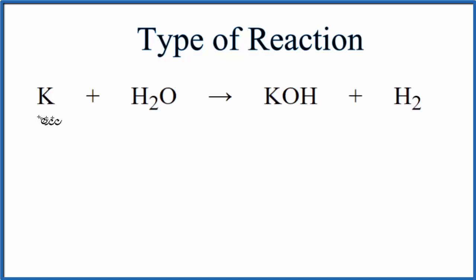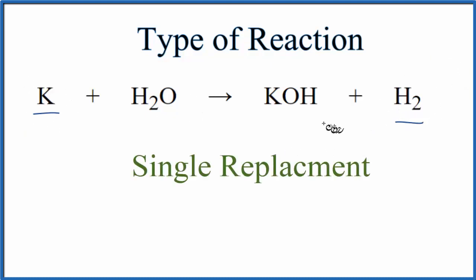When we look at the reaction we see we have a metal all by itself here and then we have elemental hydrogen over here by itself. So we have two things by themselves, we're thinking it might be a single displacement reaction.